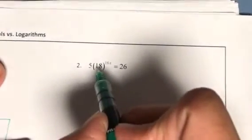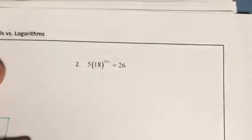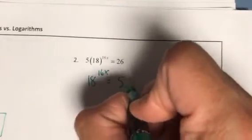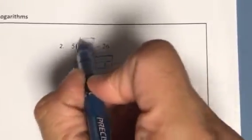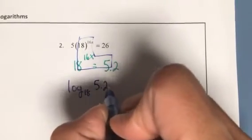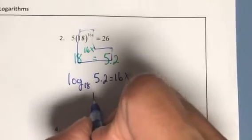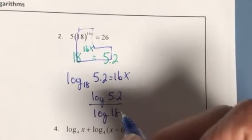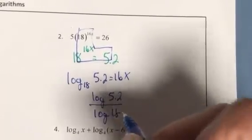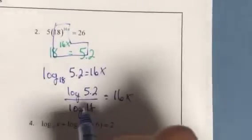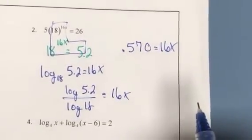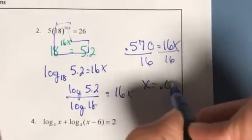The next problem has a constant: isolate the base-exponent first. Divide both sides by 5 to get 18^(16x) = 5.2. Now take the log of both sides: log(18) / log(5.2) — wait, convert: log base 18 of 5.2 = 16x. Use the calculator: that equals approximately 0.570. Divide by 16 to get x ≈ 0.036.